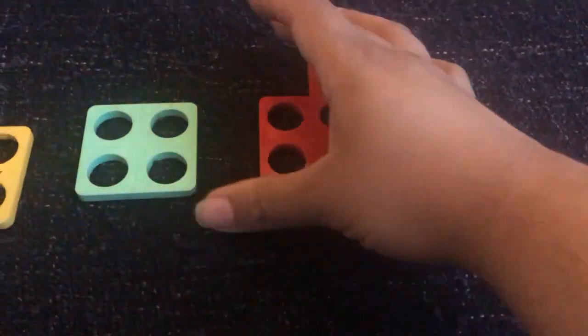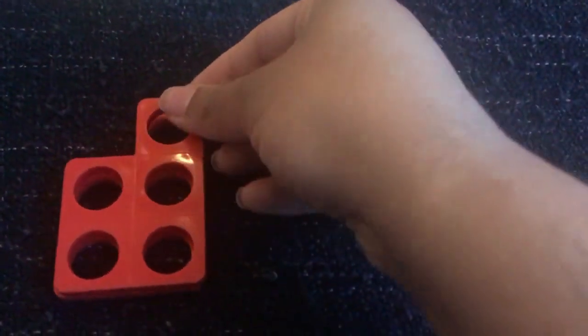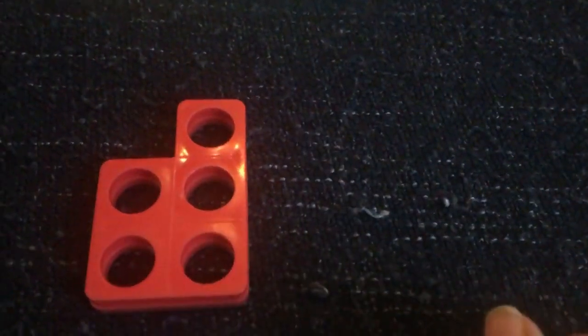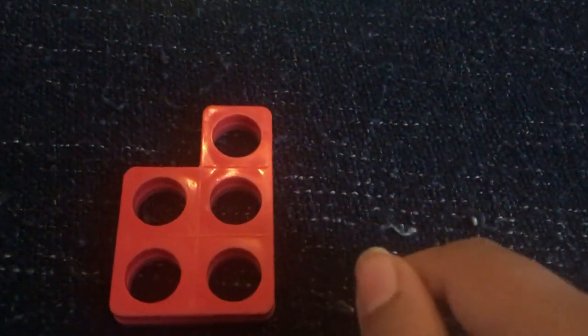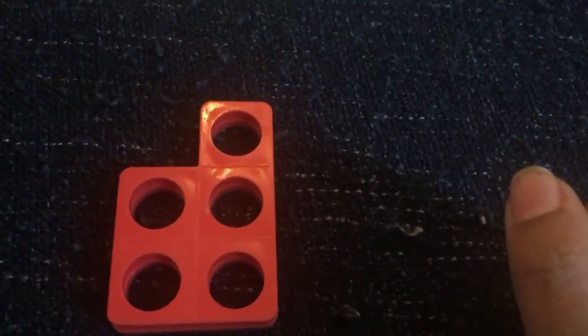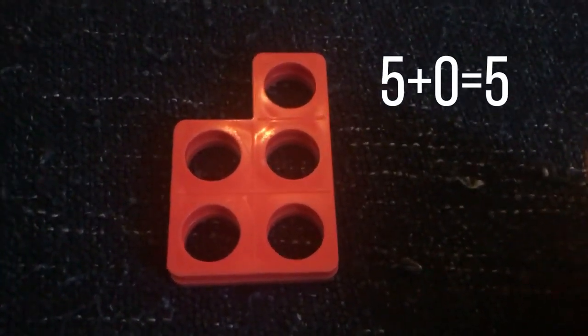So the first one I'm going to use is this. If we add it on, put it on top, it fits perfectly. So that's why we know that five add... oh I haven't added anything else, have I? So that means it's five add zero equals five.